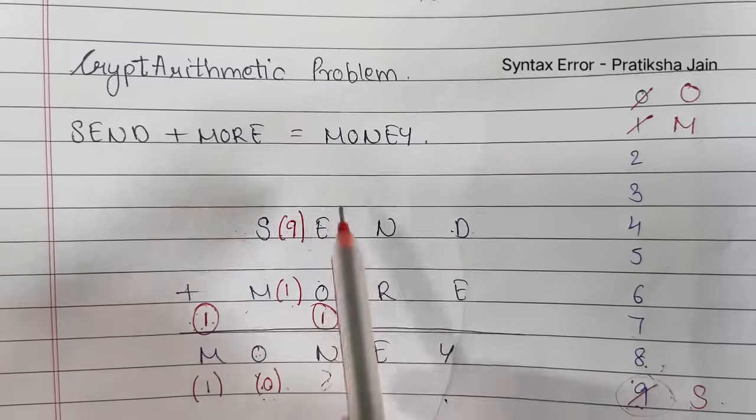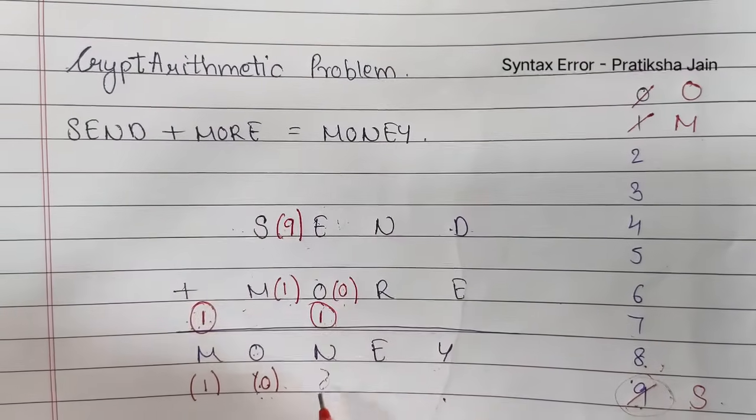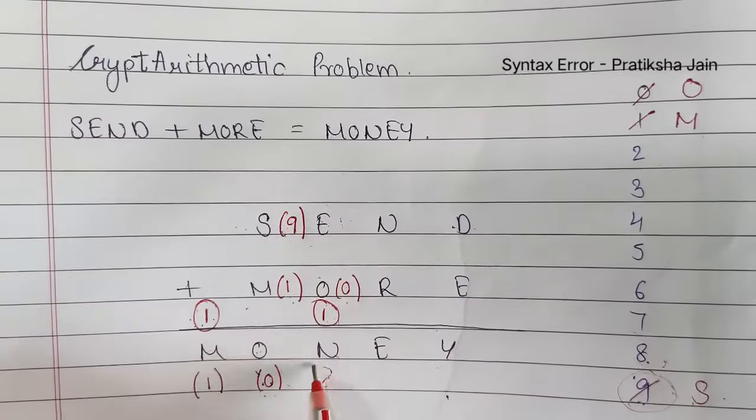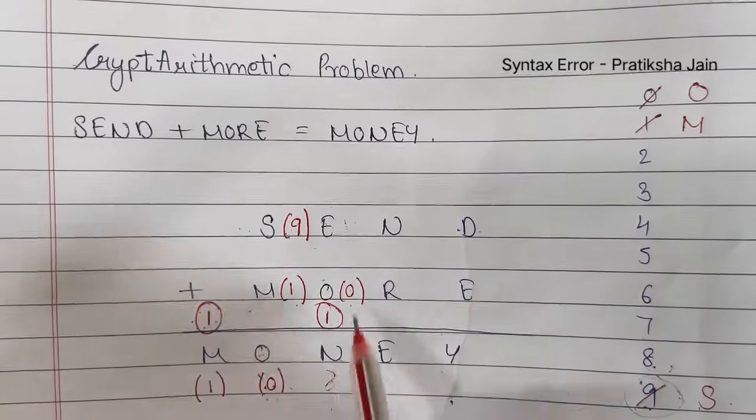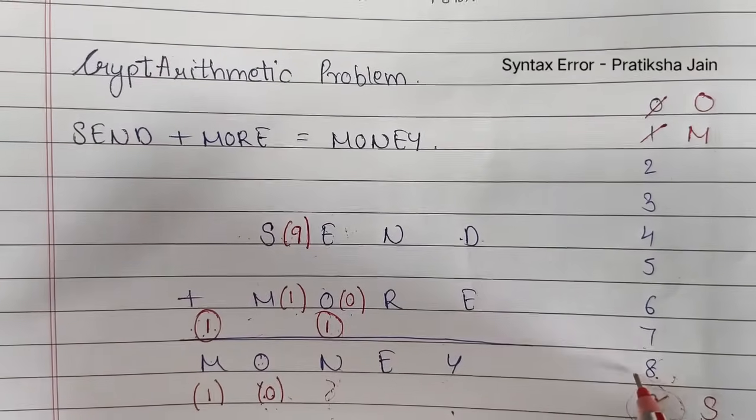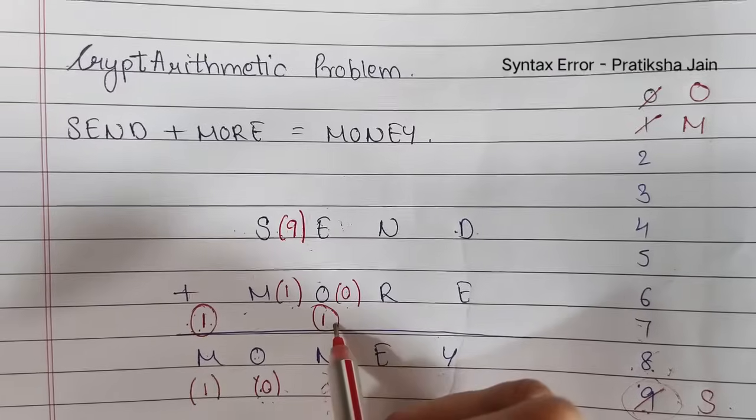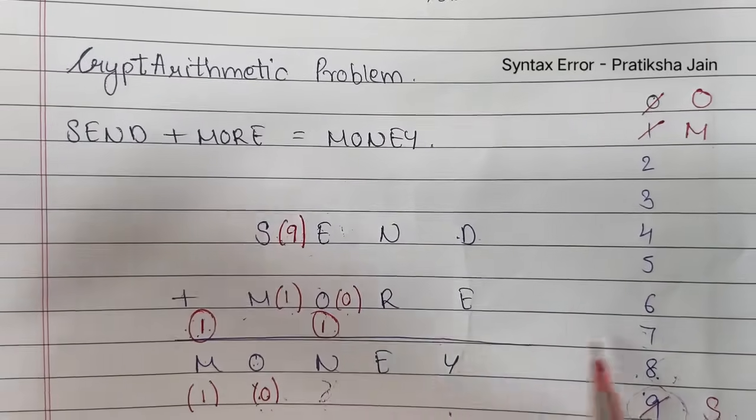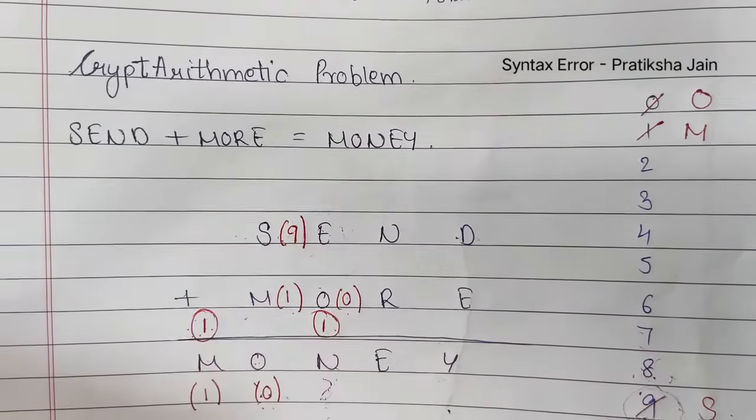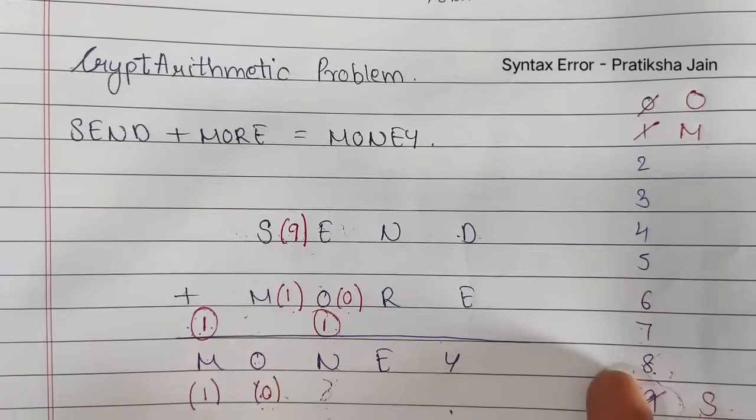So whatever result we'll get, it will be plus 1. So 8 plus 1 gives me 9. Now we cannot take 8 as E because 8 plus 1 is 9 and if this becomes 9 then S cannot be 9. So that means 8 cannot be assigned to E. Let's go for 7. 7 plus 1 gives me 8 and 8 is not assigned to any of the number and even 7 is not assigned to any of the number. So let us take 8 and 7 respectively.